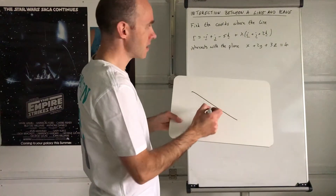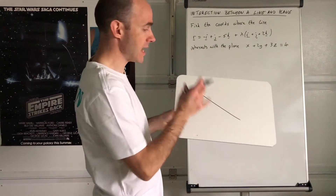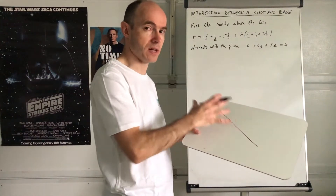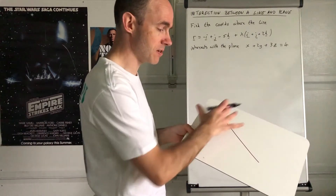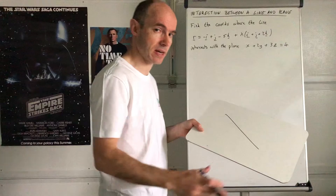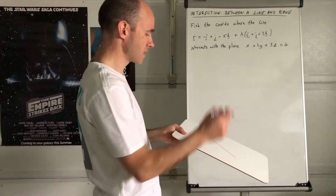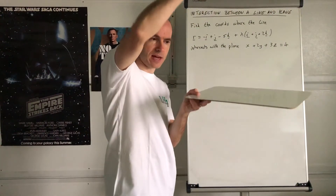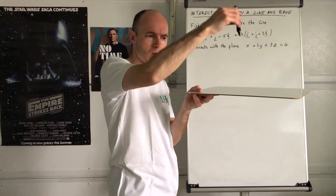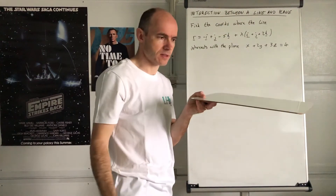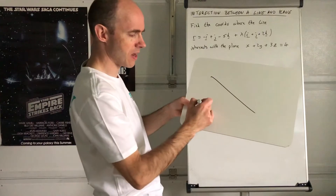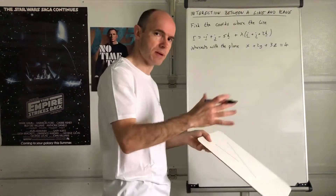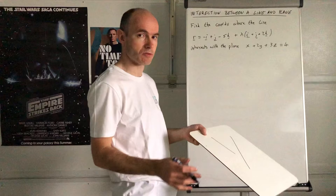Suppose the line lies in the plane itself - then you get an infinite number of answers. There's an infinite number of points where that can happen. So what we assume in this case is that you've got a line that intersects a plane at just one point, because there are various other possibilities. If the line lies in the plane, there's an infinite number of points where it crosses.